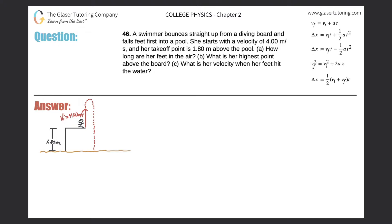Number 46. A swimmer bounces straight up from a diving board and falls feet first into a pool. She starts with a velocity of 4.00 meters per second, and her takeoff point is 1.8 meters above the pool. Letter A: how long are her feet in the air?